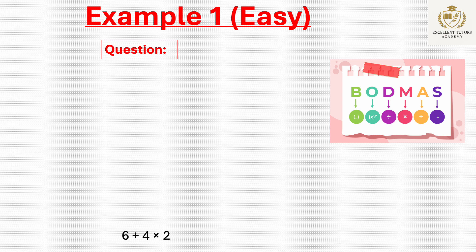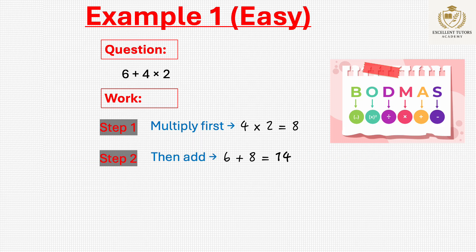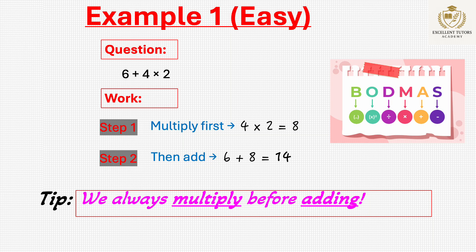Example 1: 6 + 4 × 2. Step 1: Multiply 4 × 2 = 8. Step 2: Add 6 + 8 = 14. Remember, always multiply before adding.